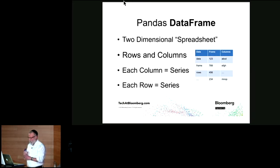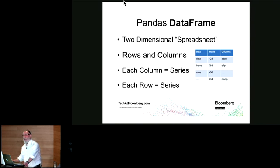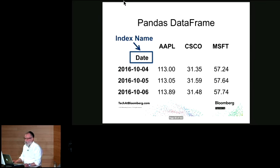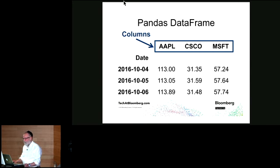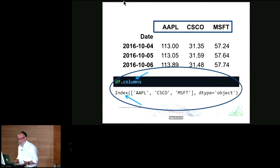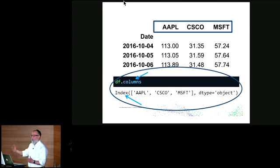A data frame you can think of as a two-dimensional spreadsheet with rows and columns. Each column is a Pandas series, and each row is a Pandas series. The parts of a data frame are: your data values, your index, index name, and columns. If you look at the index attribute on a data frame, you get back an index object containing a list of keys. Similarly, the columns attribute returns an index object with a list of column headings. Both the column headings and the index are index objects — we just call one 'index' and one 'columns.'